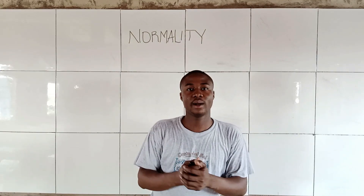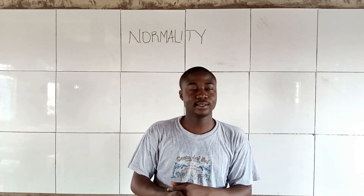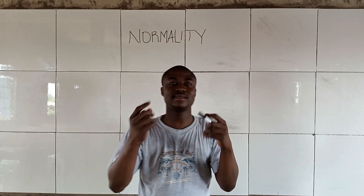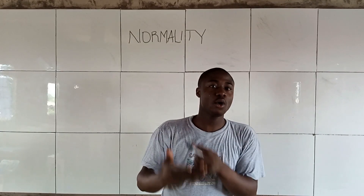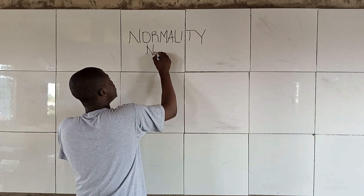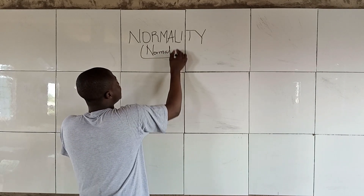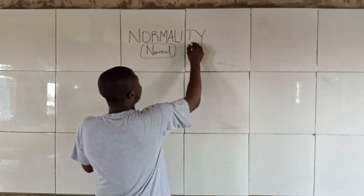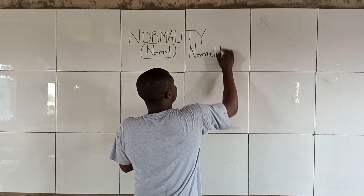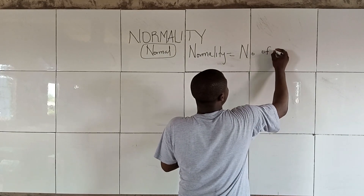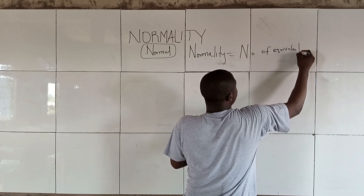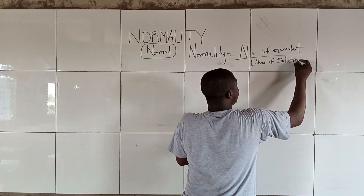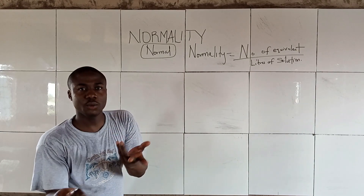Welcome back to my YouTube channel. In today's video lesson, I shall be talking about normality. Normality is simply a concentration unit, expressed as 'normal.' The formula for normality is: normality equals number of equivalents over liters of solution.